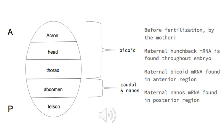We have divided the segments and what protein is responsible for each segment. As you can see depicted, Bicoid is in charge of acron, head, and thorax fates, while caudal and nanos are responsible for the abdomen and the telson.